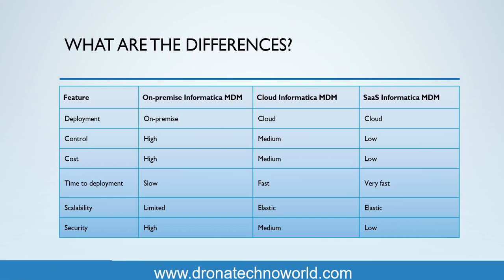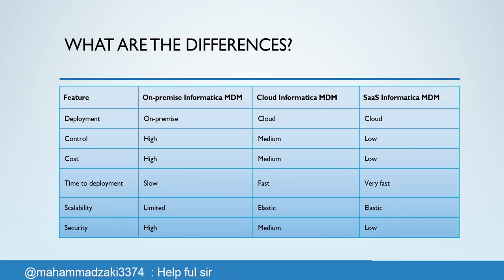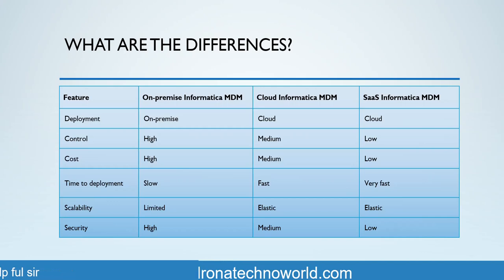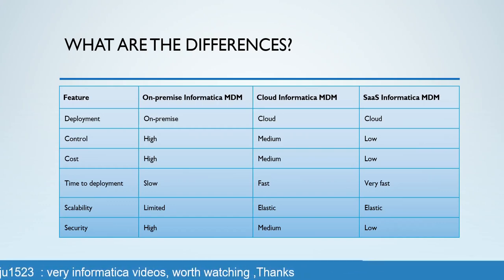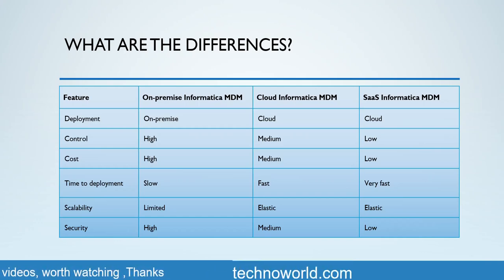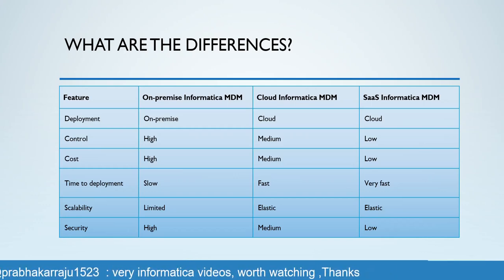Let's start with deployment. In on-premise MDM, we need to have an administrative team. The development team works with the administrative team to carry out the deployment. As there are multiple teams involved and changes need to be controlled between these two teams, proper planning needs to be done — so it is sometimes time-consuming. For Cloud and SaaS Informatica MDM, the deployment process is quicker because it's a pre-established deployment process. The development team just works with the Informatica team to get deployment done. For example, deploying various components on different servers on-premise is already automated on the Informatica cloud side.